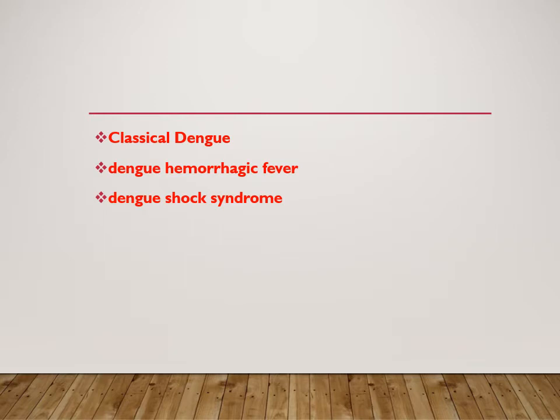The third and most complicated presentation is when the patient ends up in shock — dengue shock syndrome. You can identify shock by a weak or rapid pulse, pulse pressure less than 20 mmHg, and cold, clammy skin.